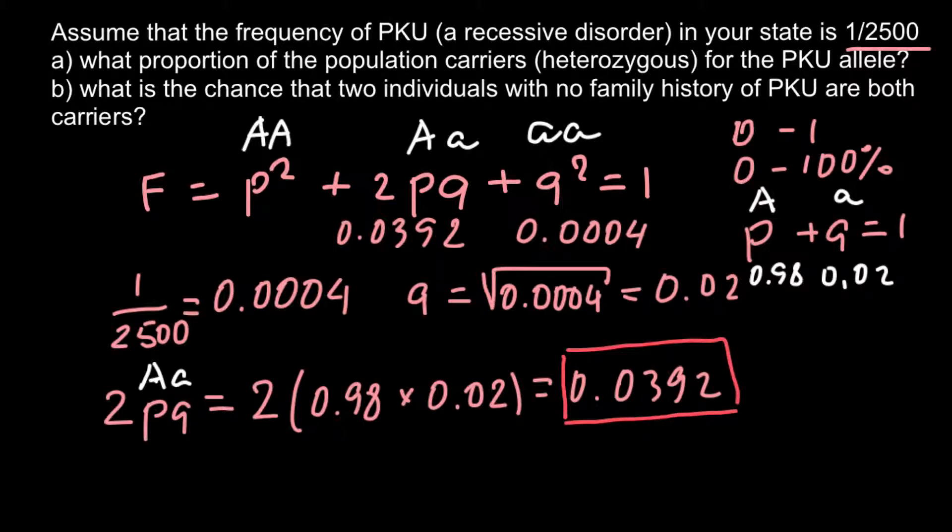And now we can move to question B. What is the chance that two individuals with no family history of PKU are both carriers? This is the easiest part in our calculation. So what is the probability that one person with no history of occurrence of this genetic disorder in his family would be a carrier? We have found this number. The probability that the first person would be a carrier would be 0.0392.